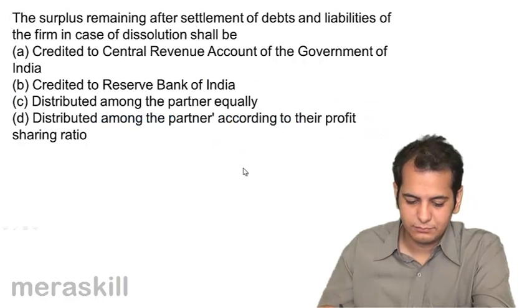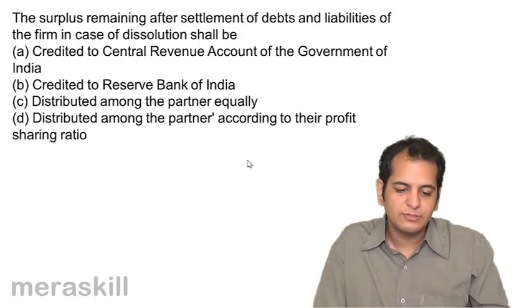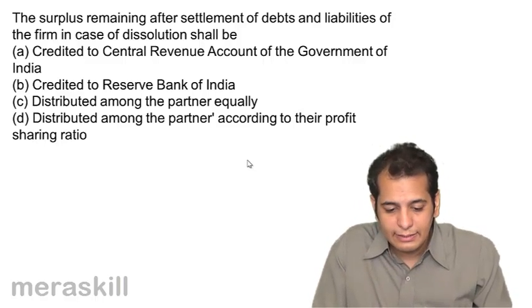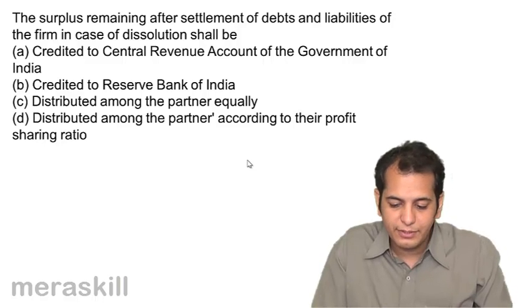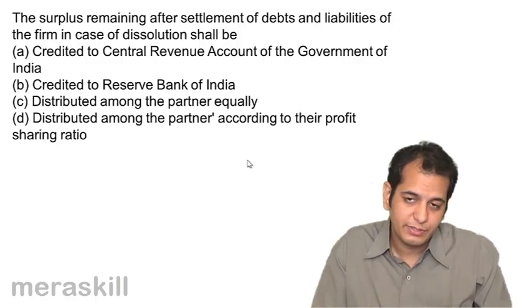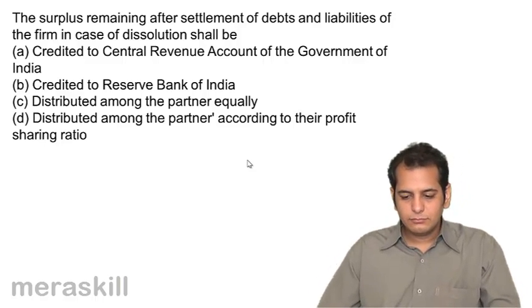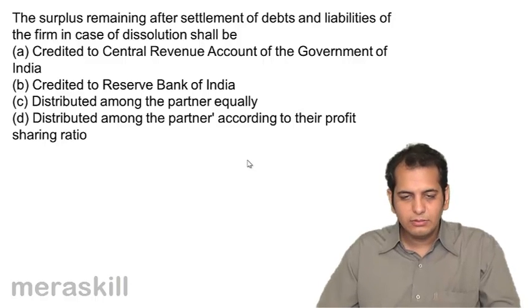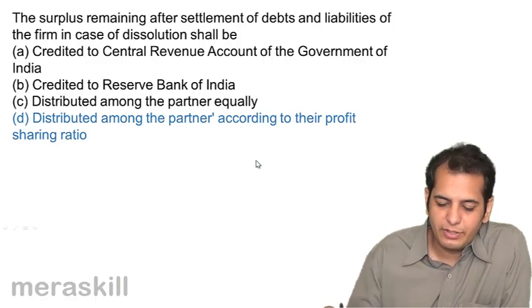The surplus remaining after settlement of debts and liabilities of the firm in case of dissolution shall be credited to the central revenue account of the Government of India, credited to RBI, distributed among partners equally, or distributed among partners according to the profit sharing ratio. The answer is it should be distributed among partners in the profit sharing ratio.